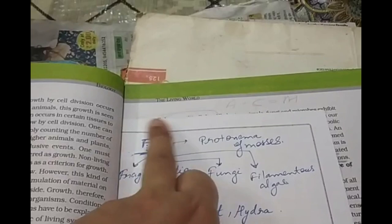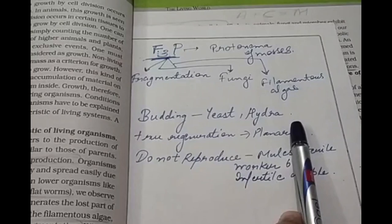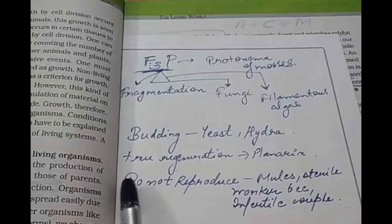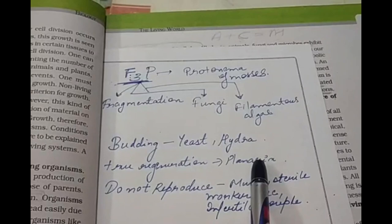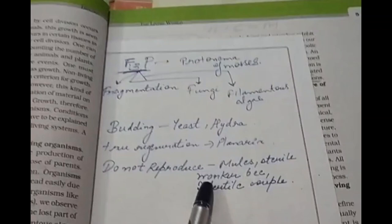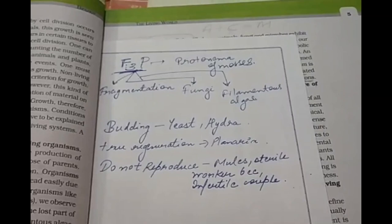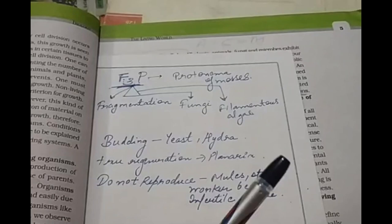I will ask you in the next video lecture what the meaning of F3P is — write the answer in the comment section. Remember: organisms that do not reproduce are mule, sterile worker bee, and infertile human couple. Keep track of where budding, fragmentation (F3P), true regeneration, and other modes of reproduction apply.